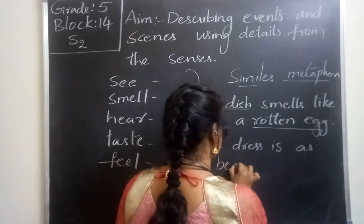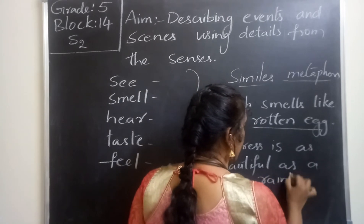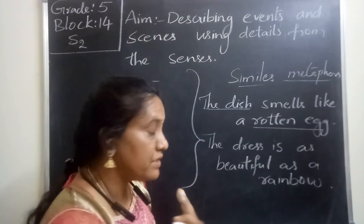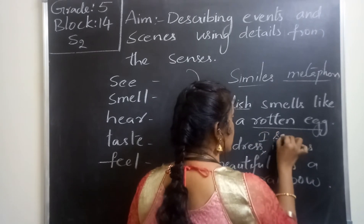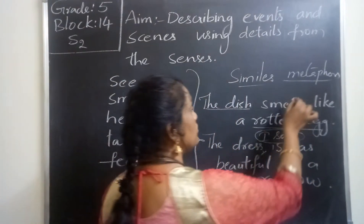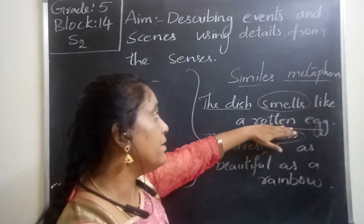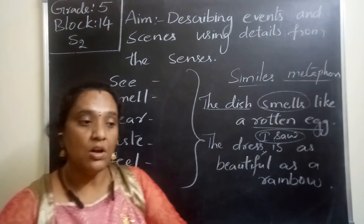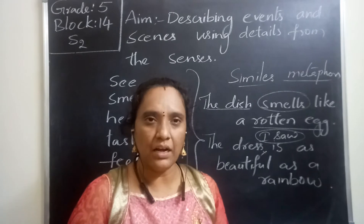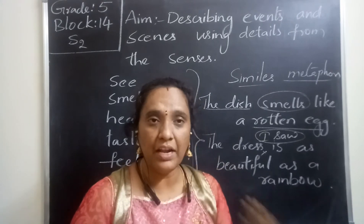Another example: 'The dress is as beautiful as a rainbow.' Here I am using senses — 'I saw' the dress — and also using a simile to compare the dress with a rainbow. So both the sense of sight and the simile are being used at the same time. You can use whatever you are learning — the basics, the senses, similes — all together in paragraphs.